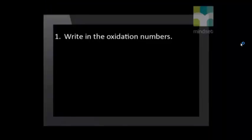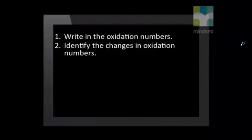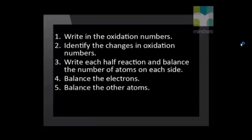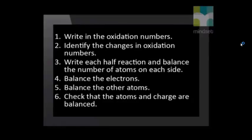So we have now used oxidation numbers to balance reactions. Let us go through the steps once more. Step 1: Write in the oxidation numbers where needed. Step 2: Identify the changes in oxidation numbers as being either oxidation or reduction. Step 3: Write each half reaction and balance the number of atoms on each side. Step 4: Balance the electron loss and gain by multiplying appropriately. Step 5: Add water to balance the oxygen, then add hydrogen ions to balance the hydrogen. Step 6: Check that the atoms and charge are balanced.